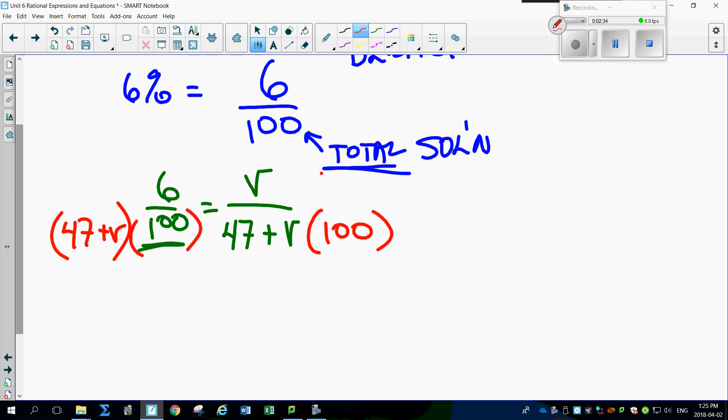And multiplying this of course by 100. So that means multiplying the top by 100 and multiplying this by 47 plus V. Denominators are the same, gone. This now becomes a distributive property.